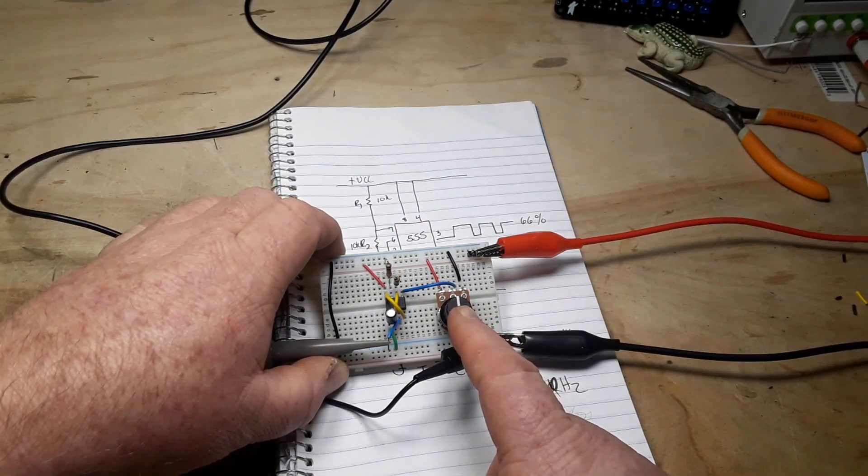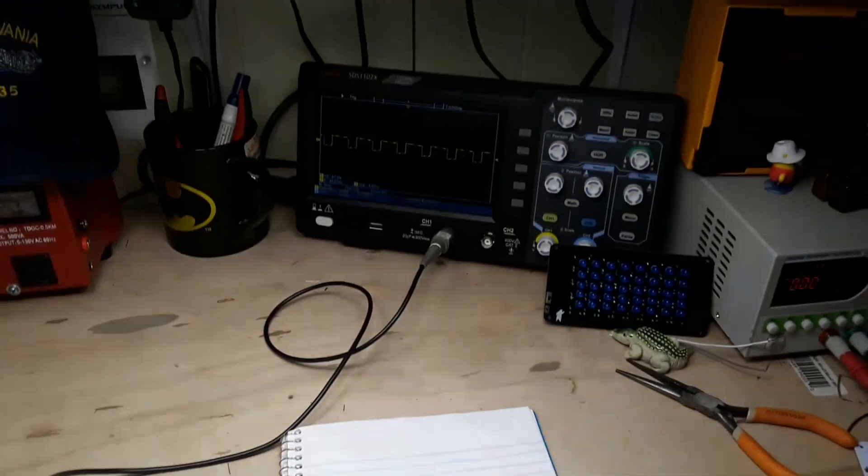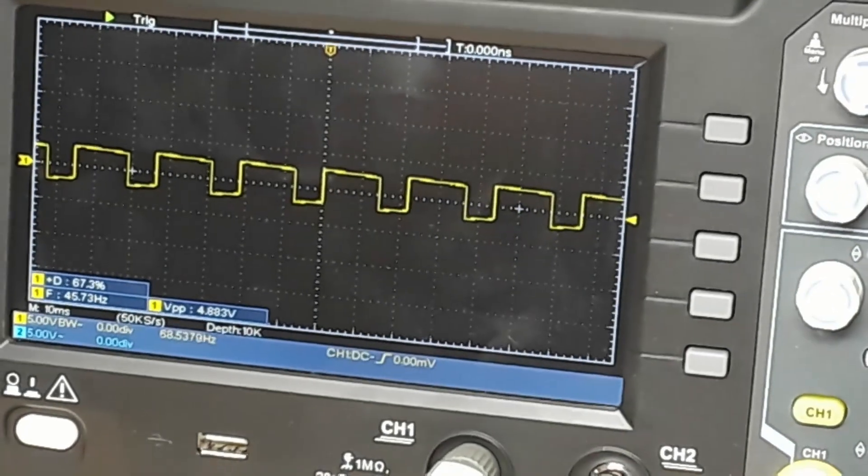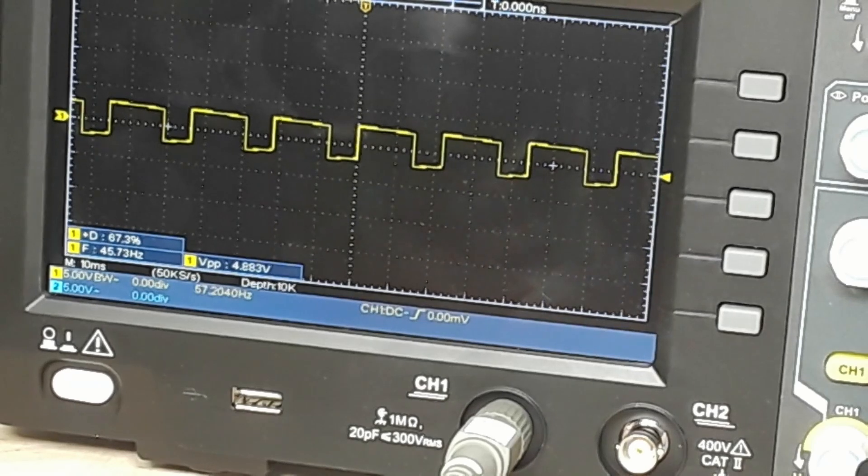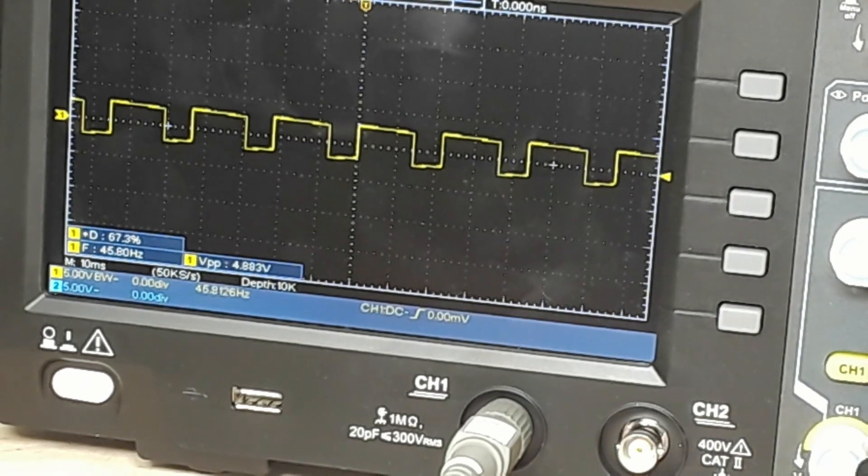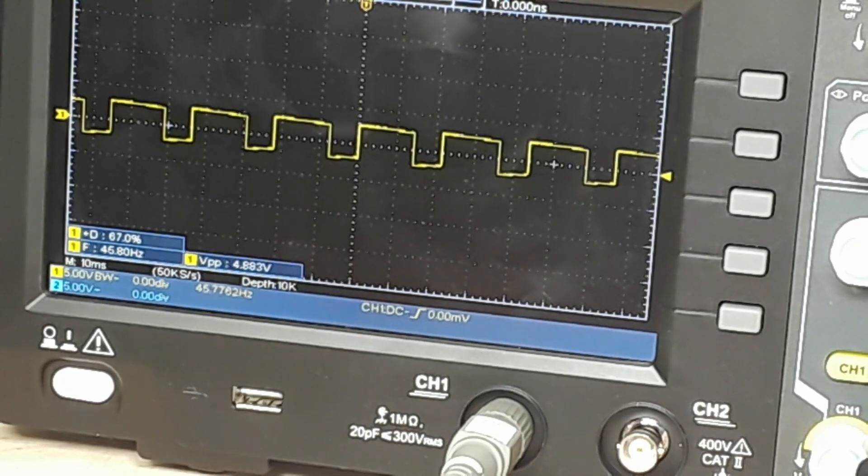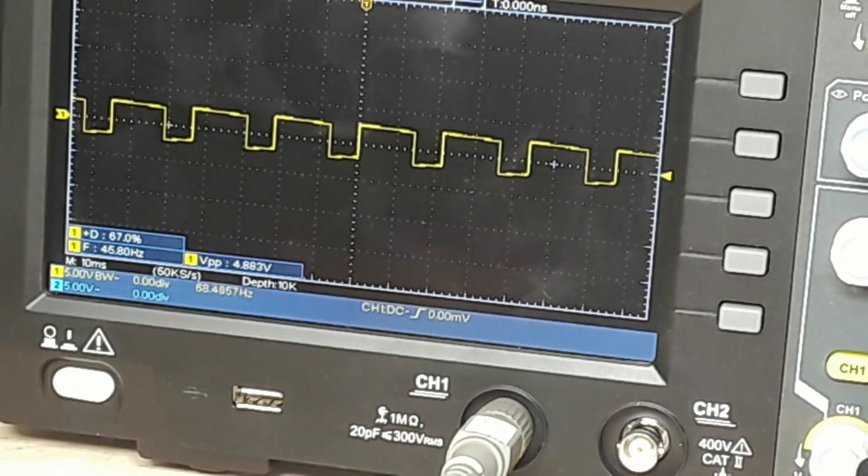Now we're set at about 50 percent here, so if we roll back up and take a look at the oscilloscope, nothing has changed. Everything is pretty much the same, but I'm going to turn that potentiometer now. And nothing happened. I wonder why. Hold on.